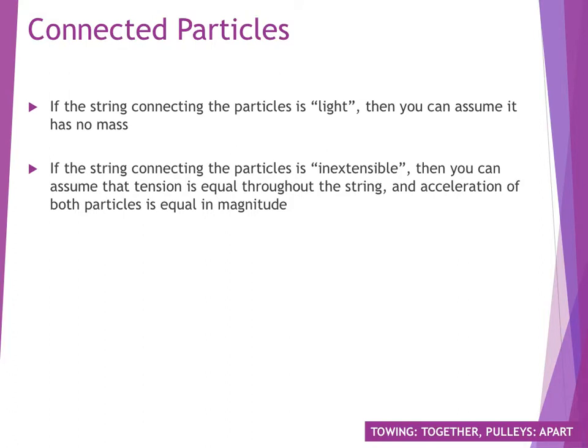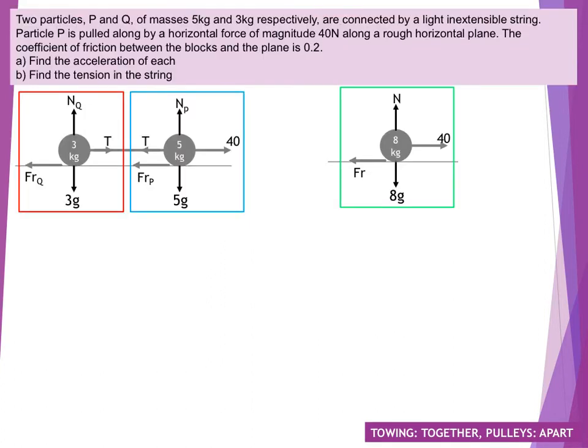There are two key words that will come up when we're looking at connected particles. One is light. If the string connecting the particles is light, then we can assume that it has no mass, so we don't have to use that in our calculations. And secondly, this word inextensible. If the string connecting the particles is inextensible, it means that we can consider tension being the same throughout the whole string, so we don't have to worry about it changing. And also, as the string is not extending, the acceleration of both particles on either end of the string has got to be the same.